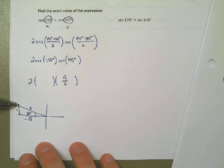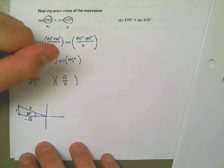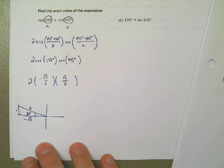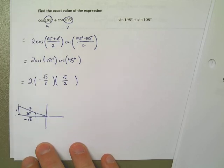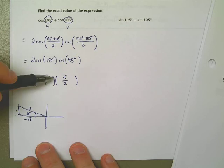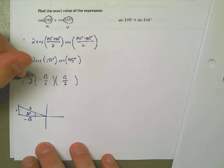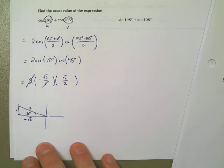So now that means that the exact value of that expression can be written as this, which now just means I need to simplify it. 2 over 2, so that's easy, those go away. I'm left with negative. The square root of 3 times the square root of 2 is the square root of 6, and that's over 2. So there's the exact expression.